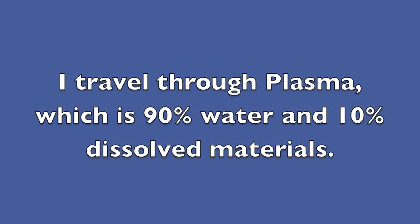How do I do that? I travel through the arteries and veins by flowing through plasma, aka my Batmobile. Plasma is made up of 90% water and 10% dissolved materials.